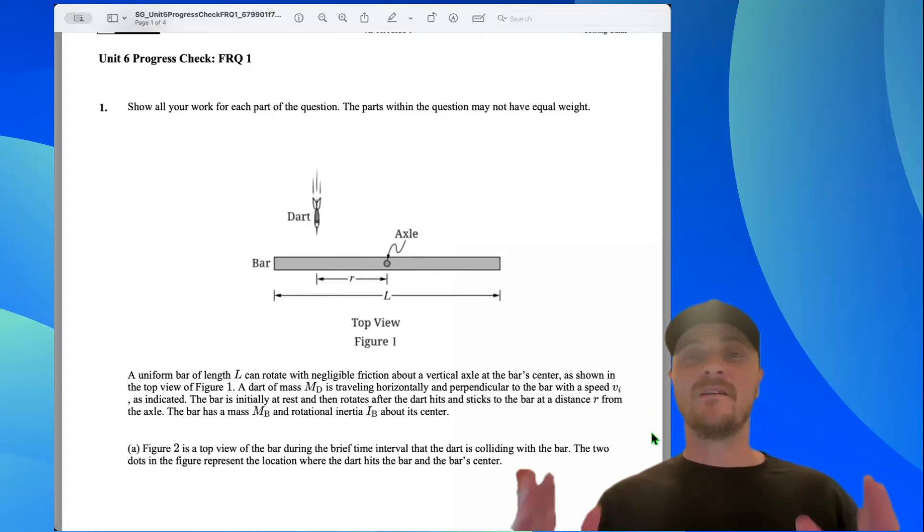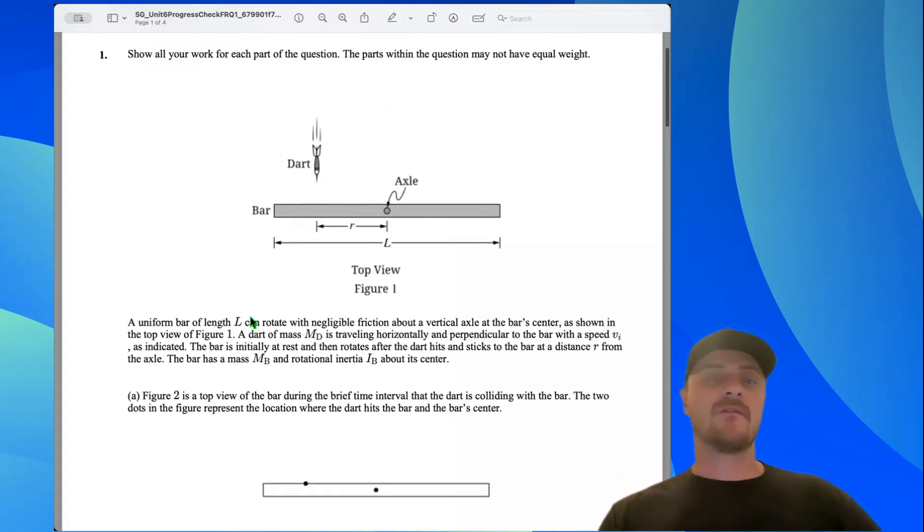This is Unit 6 FRQ1, the progress checks from AP Classroom. I'm Mr. Heinrich, great to see you guys. Let's get into this one. We've got a uniform bar of length L that can rotate with negligible friction about a vertical axis at the bar center as shown in the top view of Figure 1.